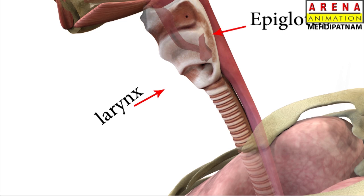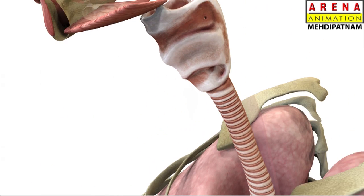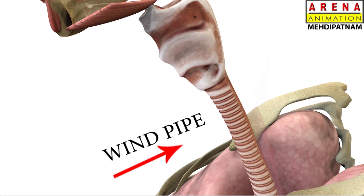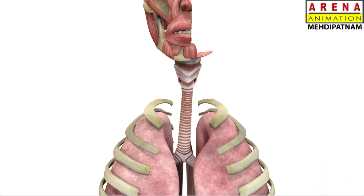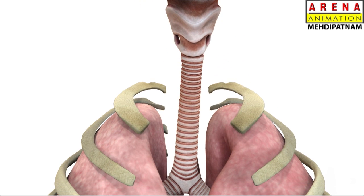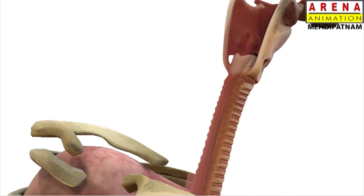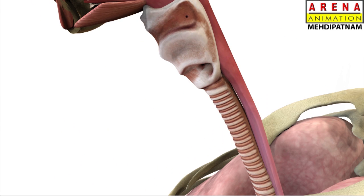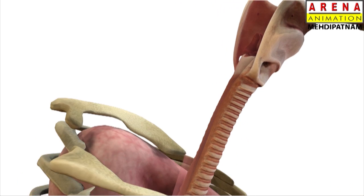Under the epiglottis, a little section called the larynx is present. The larynx is another name for the voice box. It forms the top part of the windpipe. When you breathe in through the nose or mouth, air travels through the larynx, down the windpipe, and then into the lungs. The larynx contains two bands of muscle called vocal cords. When you want to speak, the cords come together and vibrate as you breathe out. This gives you your voice.